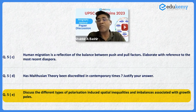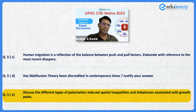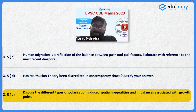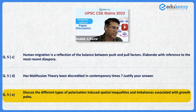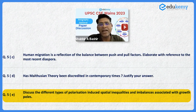Discuss the different types of polarization-induced spatial inequalities and imbalances associated with growth poles. I think this again is a tricky question. Different types of polarization and how that induces inequalities — this was the point.